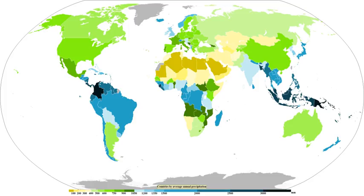Mechanisms of producing precipitation include convective, stratiform, and orographic rainfall. Convective processes involve strong vertical motions that can cause the overturning of the atmosphere within an hour and cause heavy precipitation, while stratiform processes involve weaker upward motions and less intense precipitation. Precipitation can be divided into three categories based on whether it falls as liquid water, liquid water that freezes on contact with the surface, or ice. Mixtures of different types of precipitation, including types in different categories, can fall simultaneously.